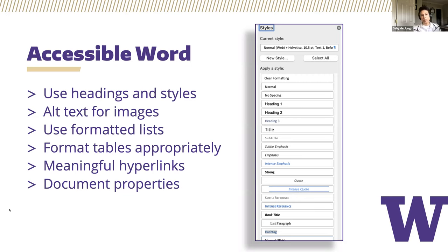Alt text provides textual information for visual elements contained in the document and should provide a brief description of the image and why that image is relevant. It's very easy in most office applications to add alt text to an image just by simply right-clicking on it. A context menu will appear and within that menu will be an option to edit alt text. If you select that option, the alt text pane will pop out on the right-hand side and a text field is prominently displayed where you can enter your alt text for that image.